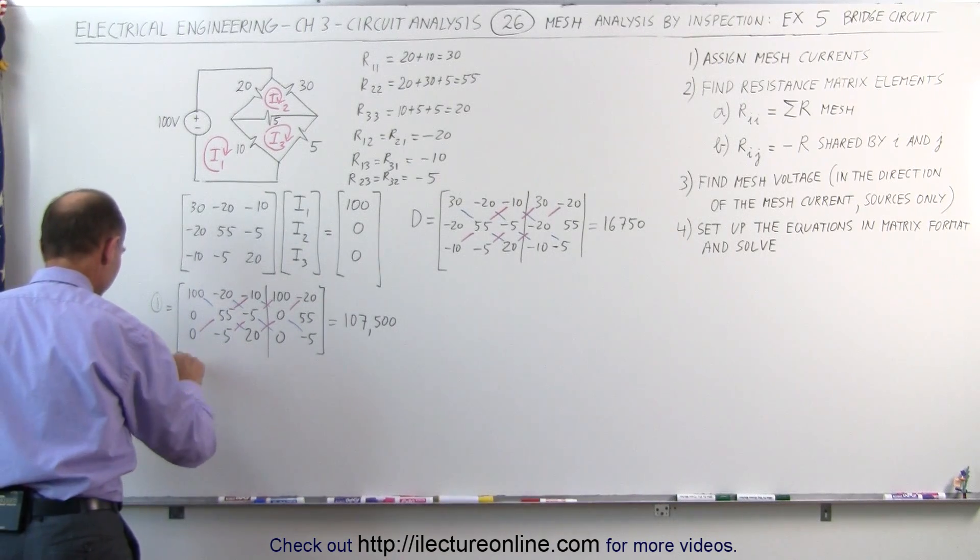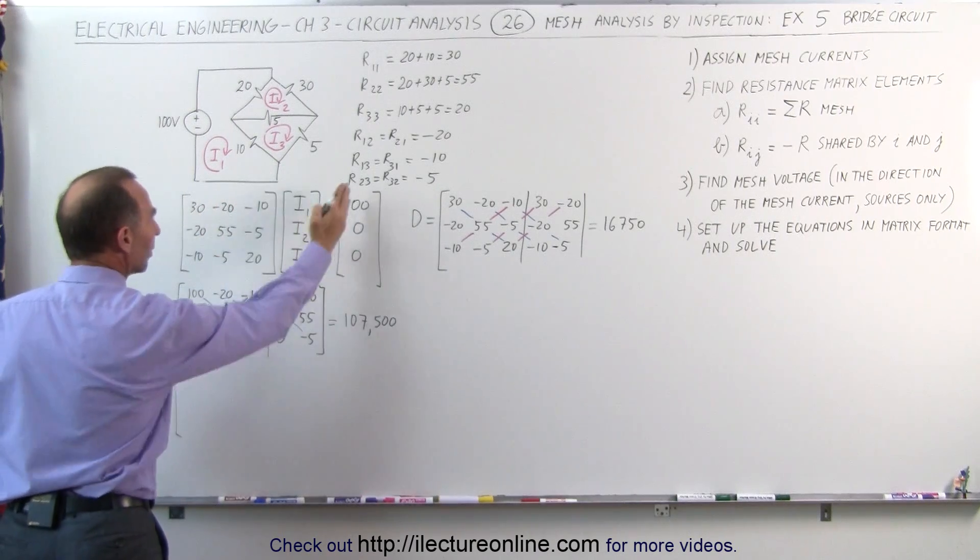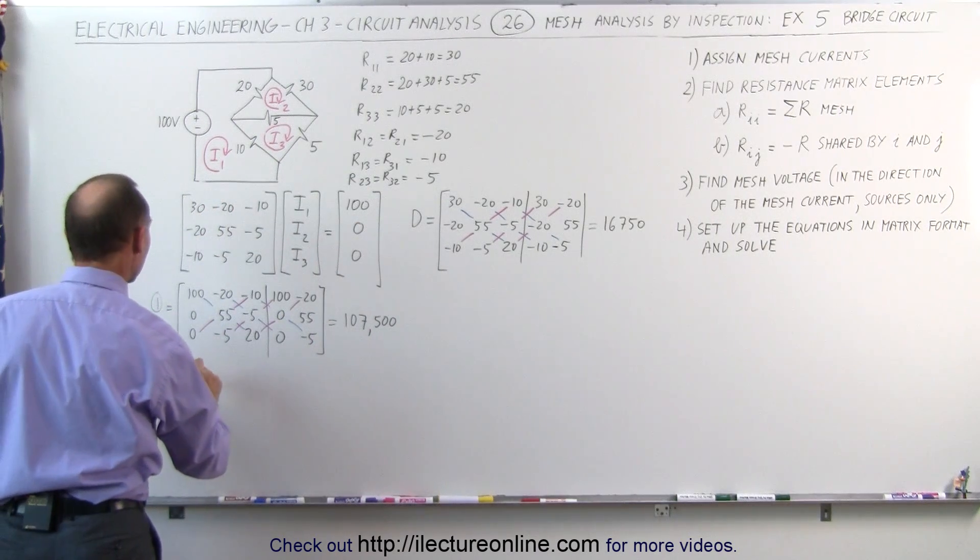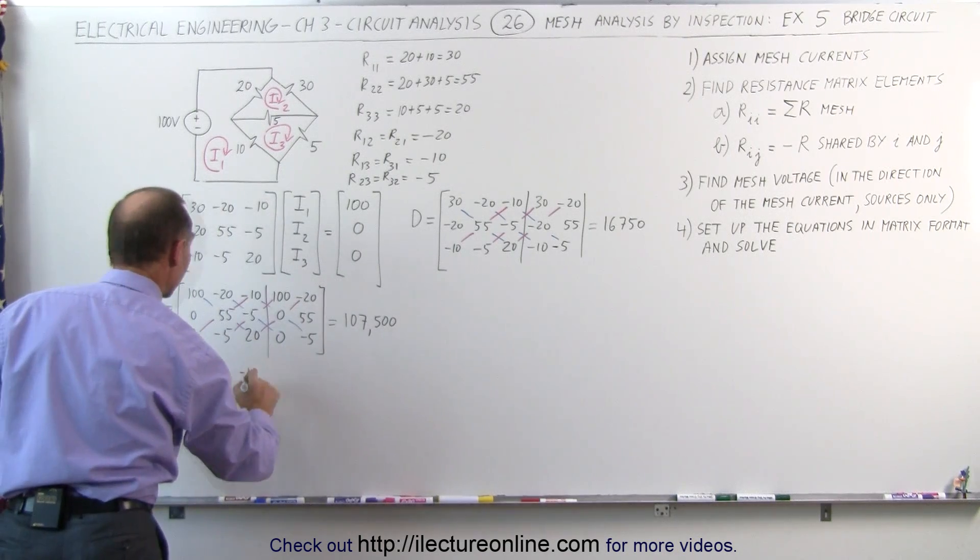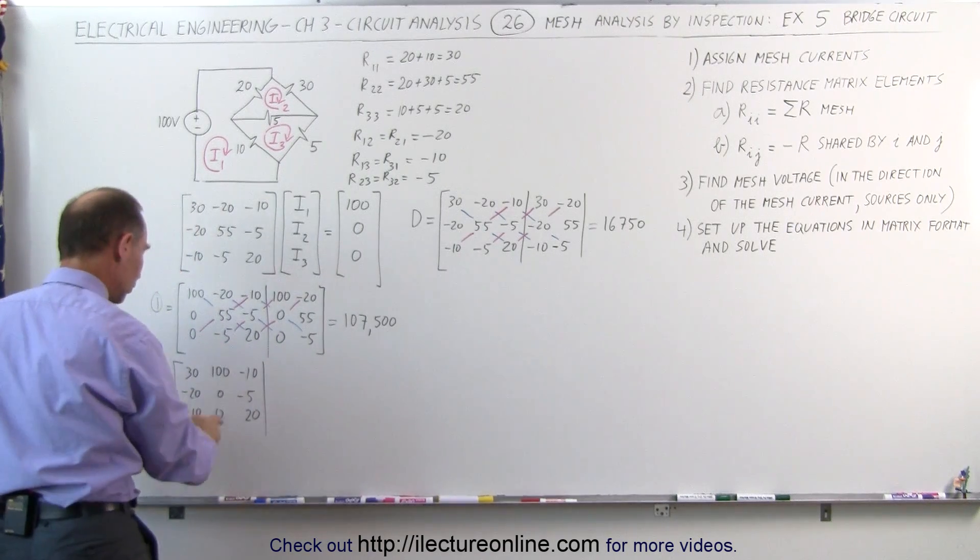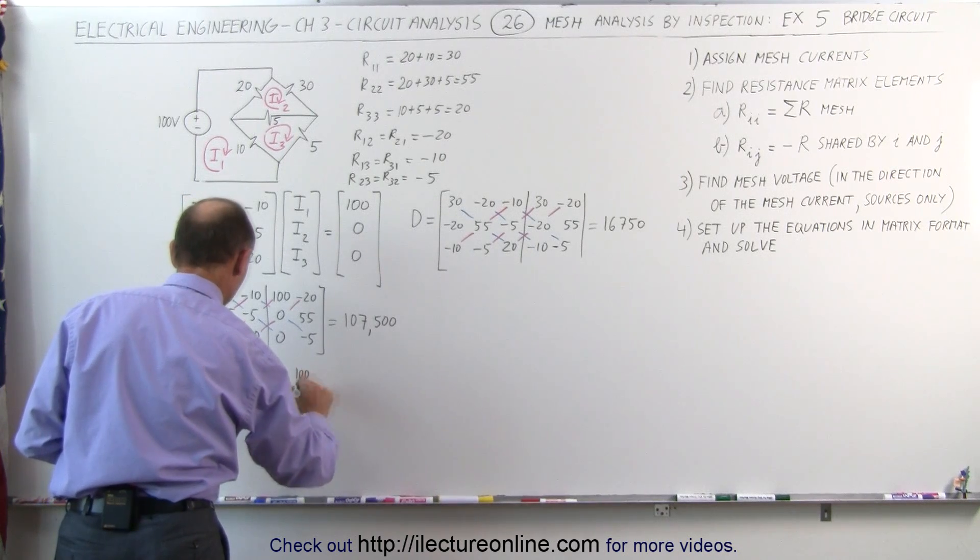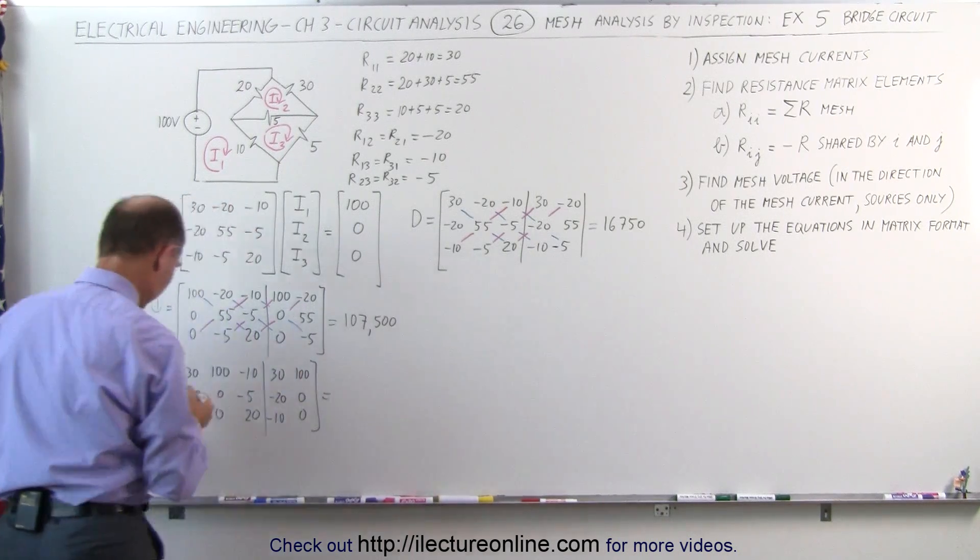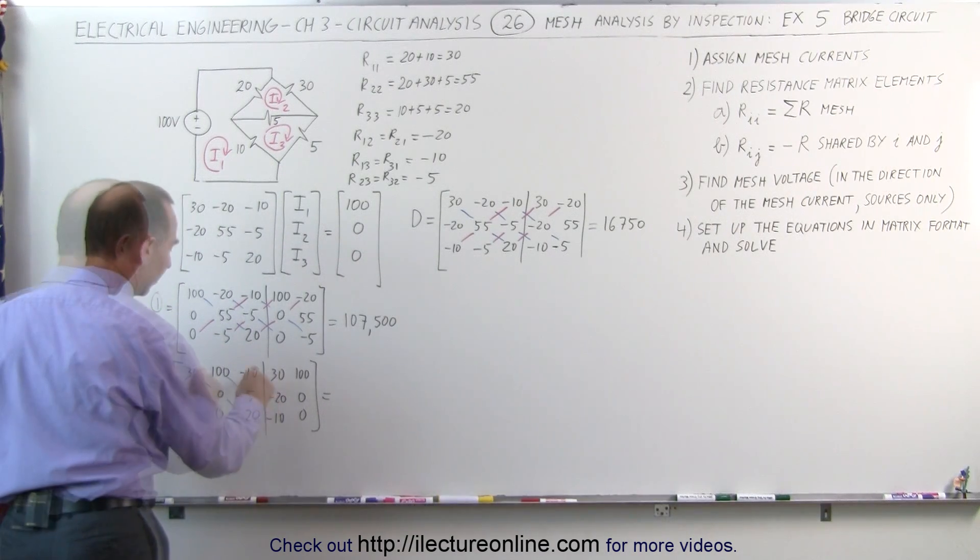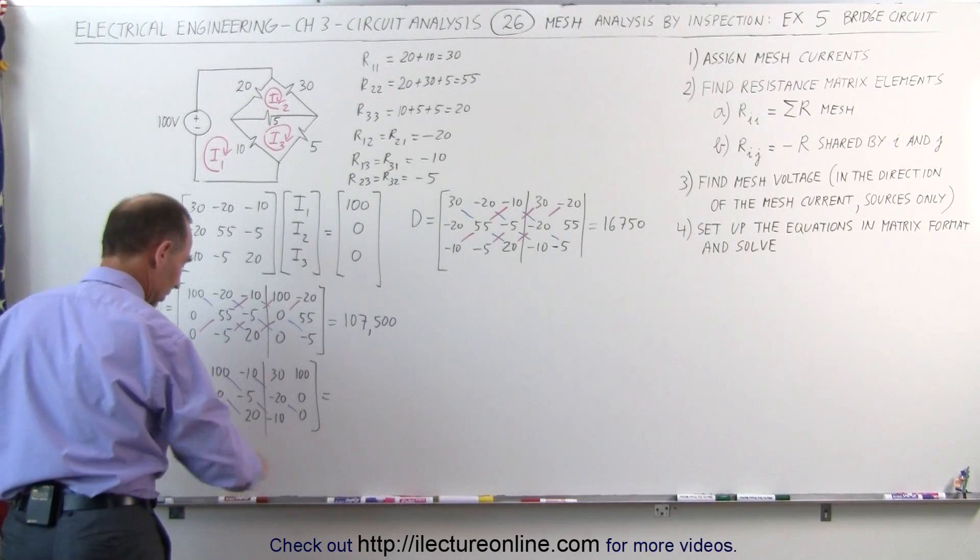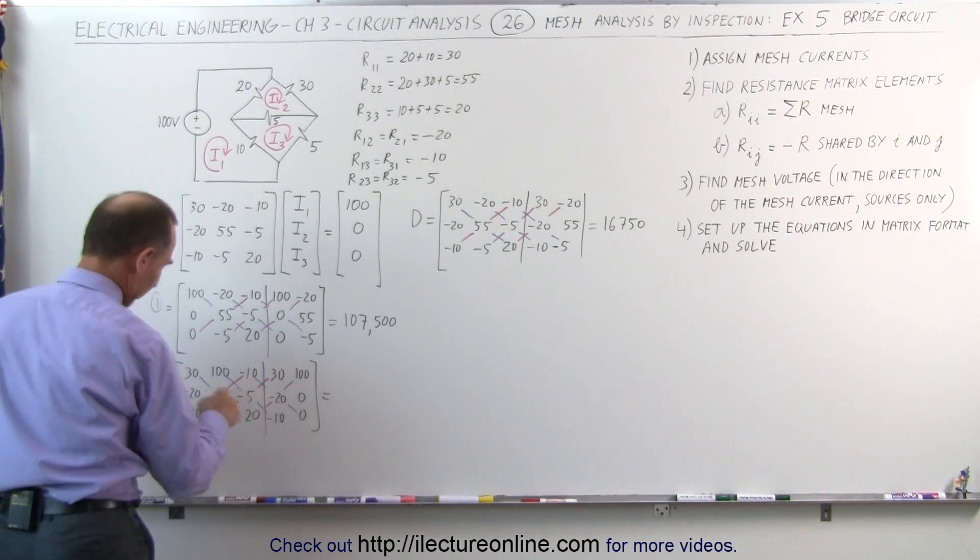Next one, second matrix. Again, we copy this down, but now we replace the second column by these numbers right here, by the voltage elements. 30, minus 20, 100, 0, 0, minus 10, 0, minus 5, 20. Then we repeat the first two columns. 30, minus 10, 100, 0. Again, using color makes it easier to see. We're going to multiply this, and this, and subtract. We'll multiply this, and this.